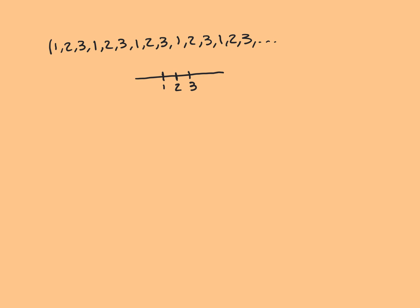So this sequence has the three limit points 1, 2, and 3. You can take the subsequence where you have all 1s, and clearly that converges to 1. You can take the subsequence of all 2s, and clearly that converges to 2. And you can take the subsequence of all 3s, and clearly that converges to 3. So these three points are clearly limit points.